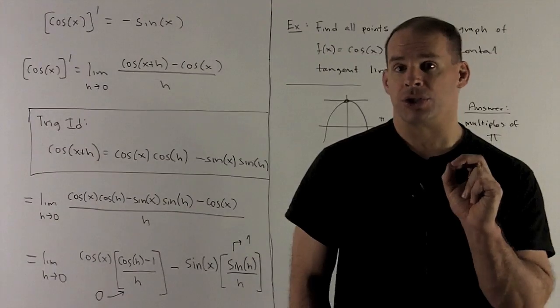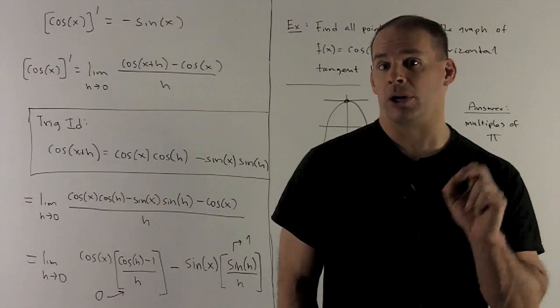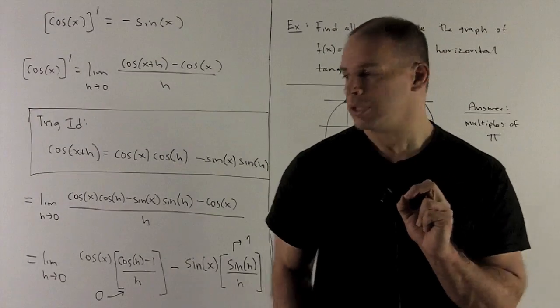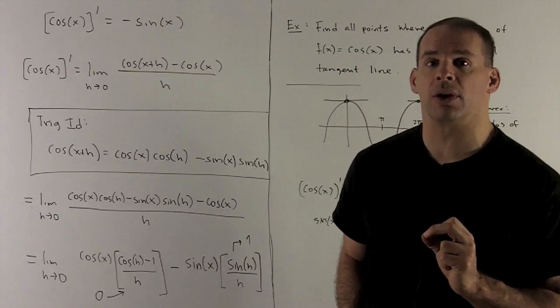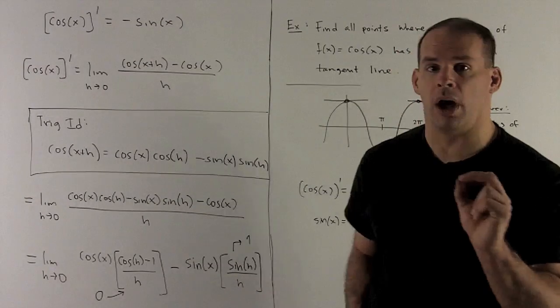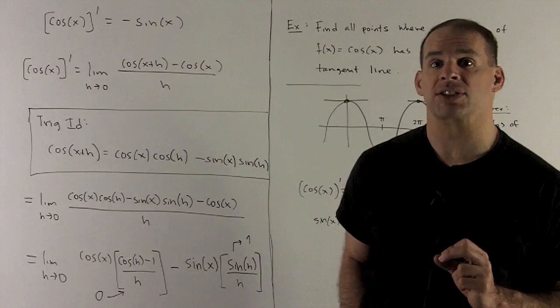Then we put that back into our fraction and see what happens. Again, we're just going to factor like we did in the sine problem. The two gadgets that show up are going to be limits that we've seen before. This term going to 0 as h goes to 0, and then this term is going to go to 1 as h goes to 0. So the only thing that's going to survive is minus sine x.